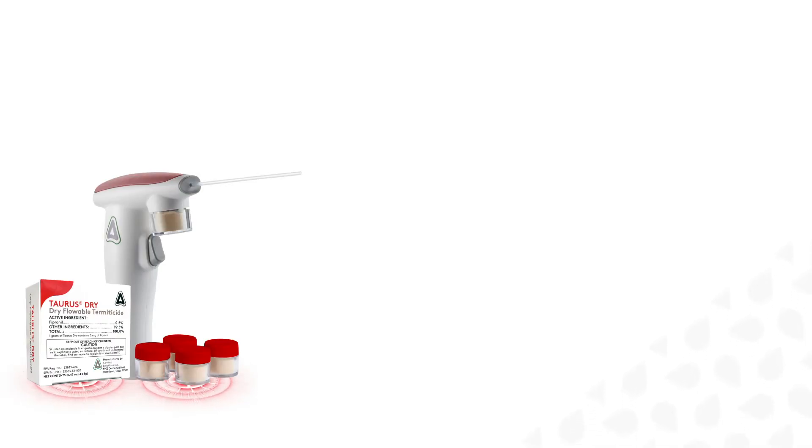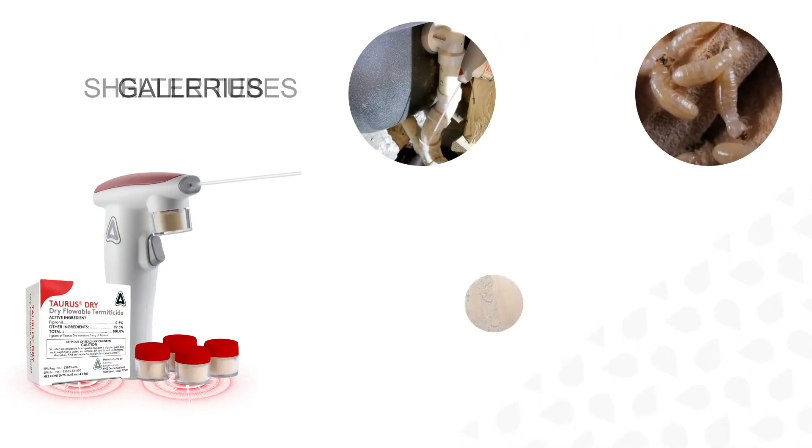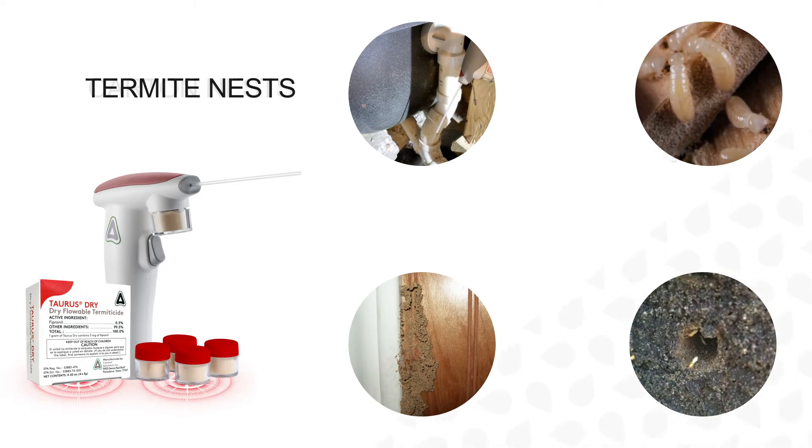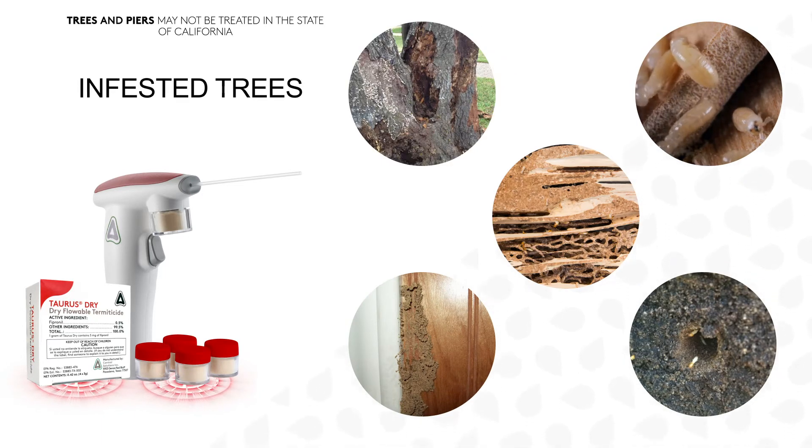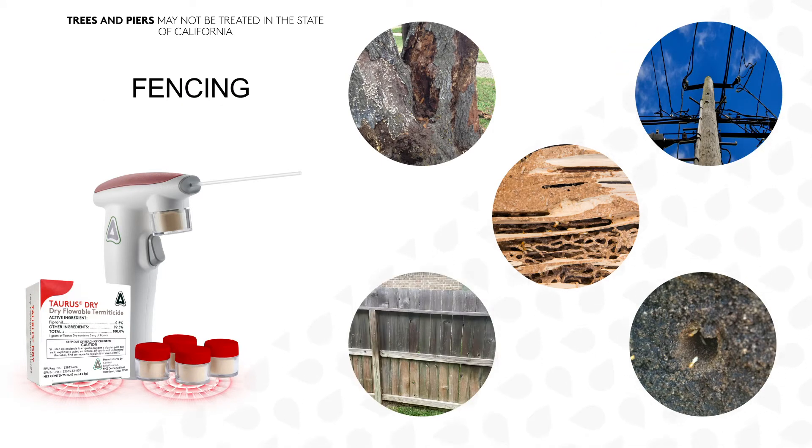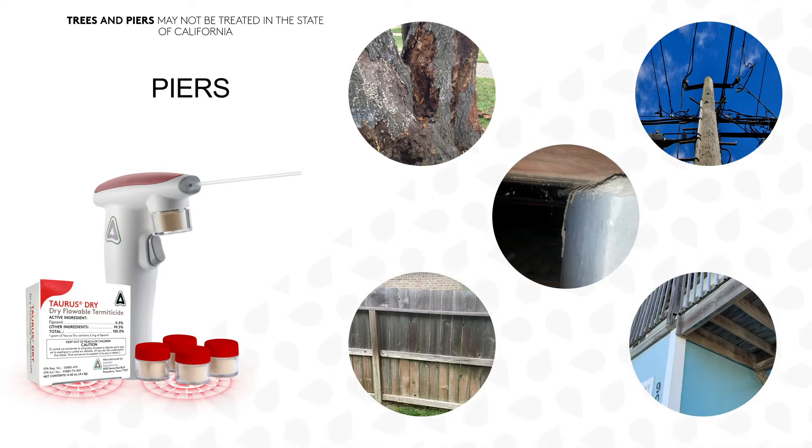Taurus Dry can be used to treat voids, galleries, shelter tubes, termite nests, carton nests, as well as outdoor areas like infested trees, utility poles, fencing, decking, piers, and beams.